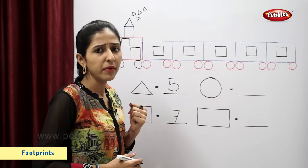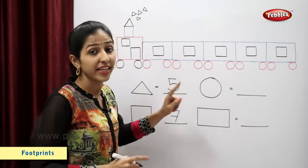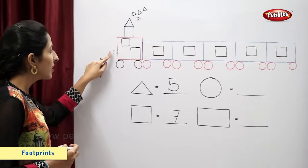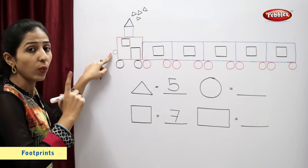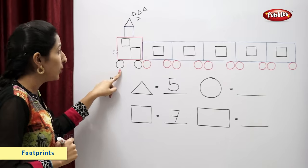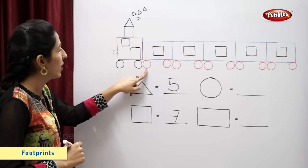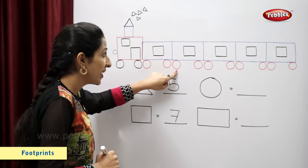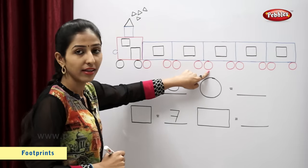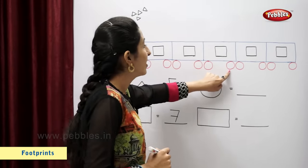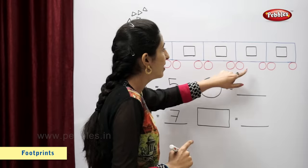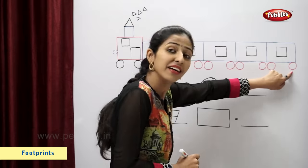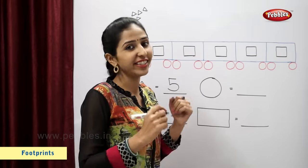Tell me, which is this shape? Yes. This is a circle. So now let's find circles. Small circles: one, two, three, four, five, six, seven, eight, nine, ten, eleven, twelve, and thirteen. So there are thirteen circles.